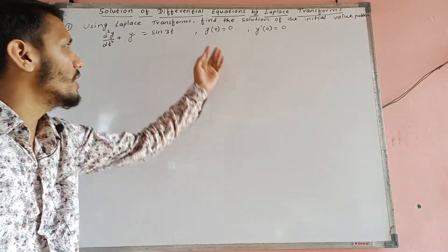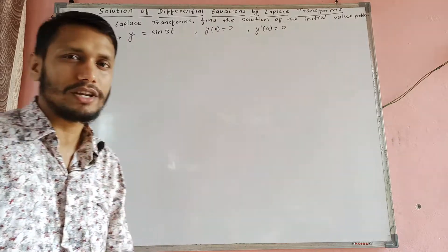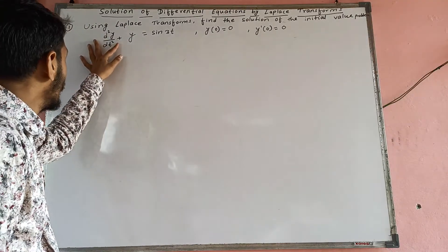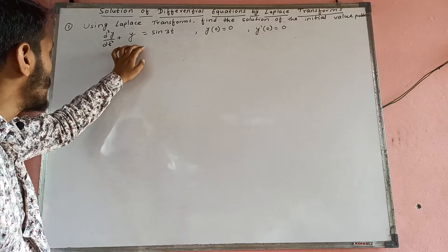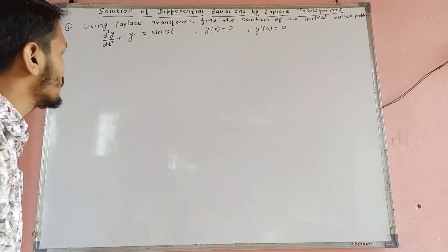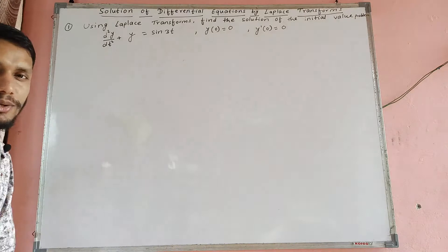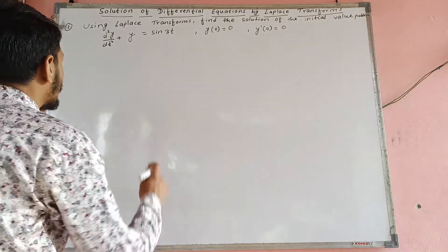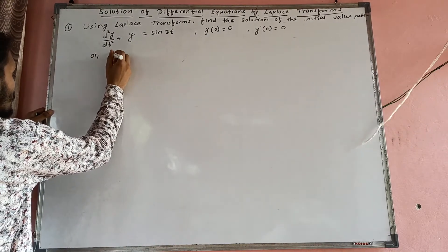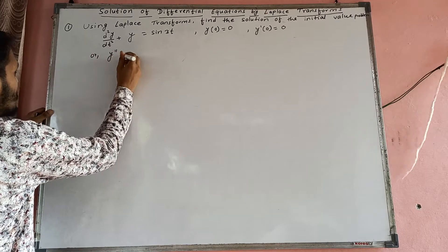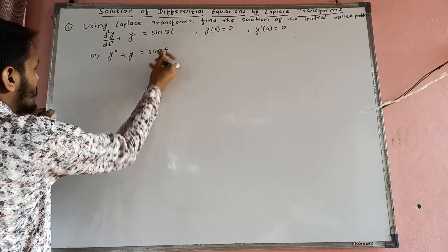Dui ta initial value diyeko cha: y(0) = 0 ra y'(0) = 0. Aaba yo differential equation: d²y/dt² + y = sin 3t diyeko cha. Aaba yesley haami solve garera y ko value ke hota nikaal na parcha.